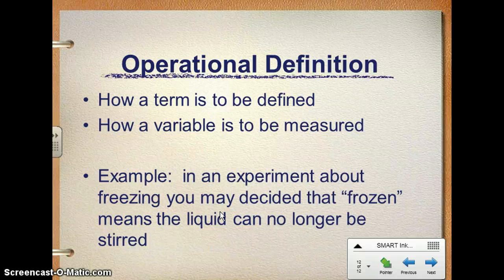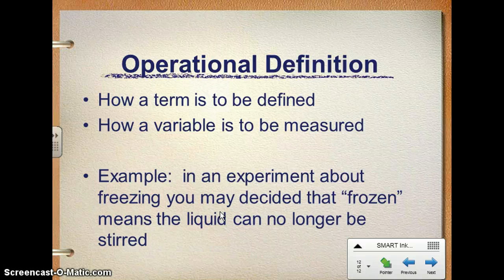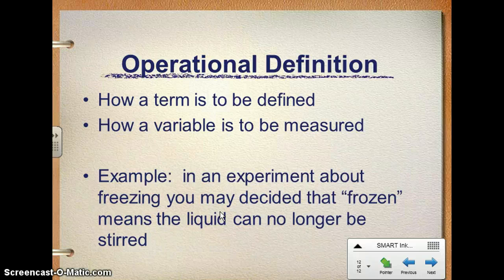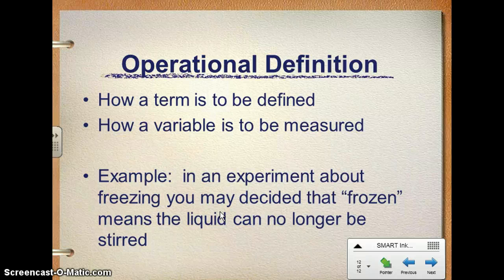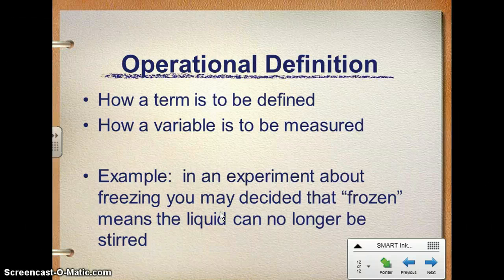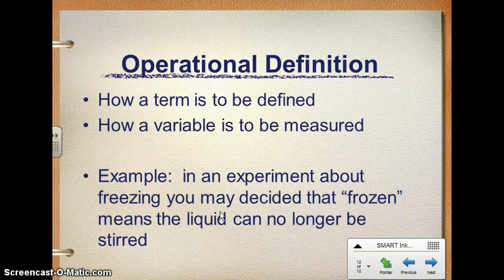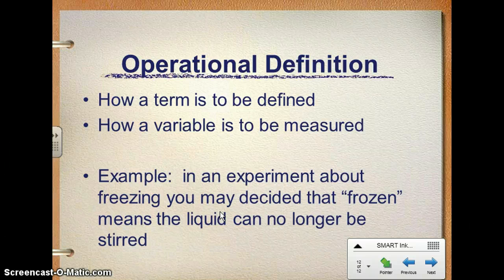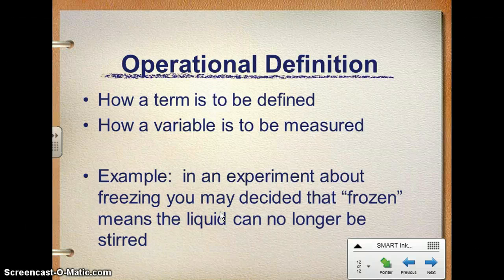It's also important to understand operational definition. This is how a term is defined and how a variable is measured. And I know that doesn't make a lot of sense right now. But the example is, if we're going to do an experiment about freezing, I need to understand what the operational definition for the word frozen means. What do I mean by the word frozen? And no, I don't mean an animated Disney film. Even though you might want to build a snowman. In my experiment, frozen is going to mean that the liquid can't be stirred anymore, not necessarily that it's frozen through and through and that it's solid. So an operational definition is just your definition for the term that you are using.